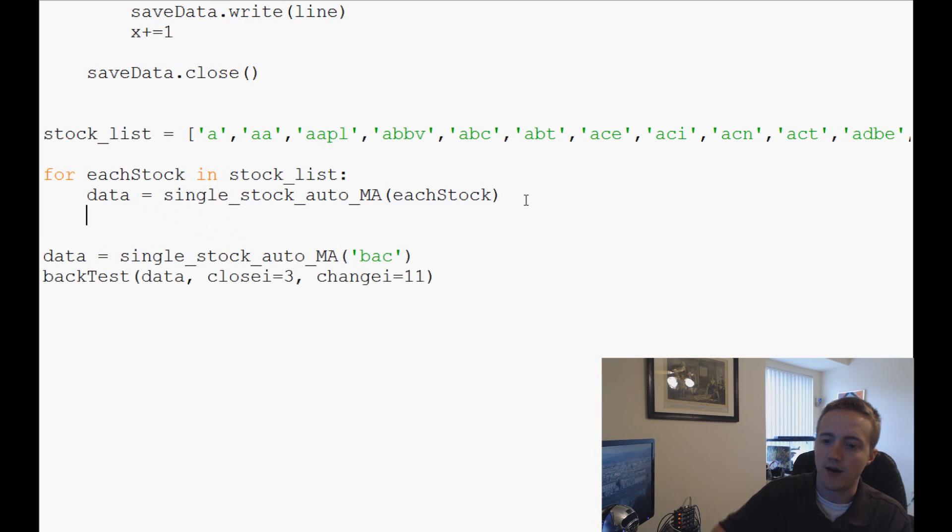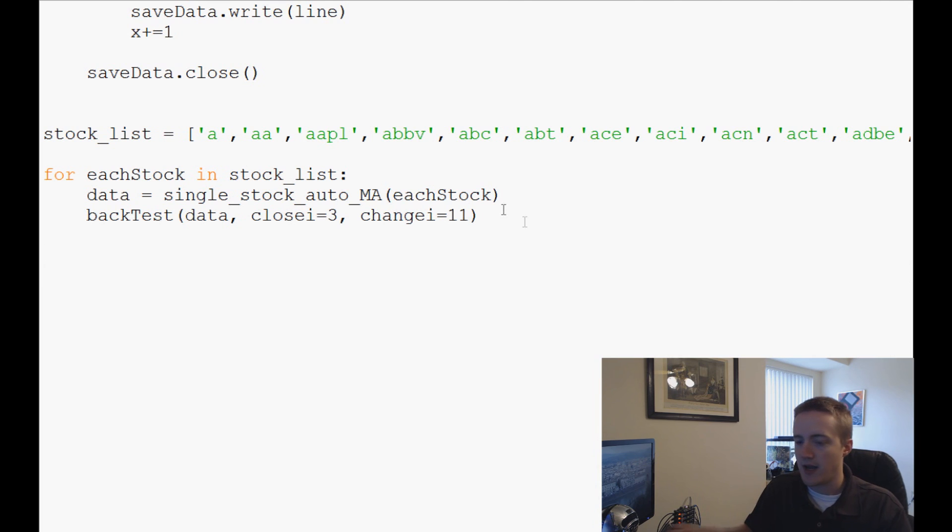And then we're going to come down and we're going to do back test, data closei equals the third and then changei equals 11. So that's basically this stuff. So we can get rid of those. Now, we'll come down here and really, I think that's all we have to do because this will automatically save all of the data that we want to work with. So that's pretty much it.